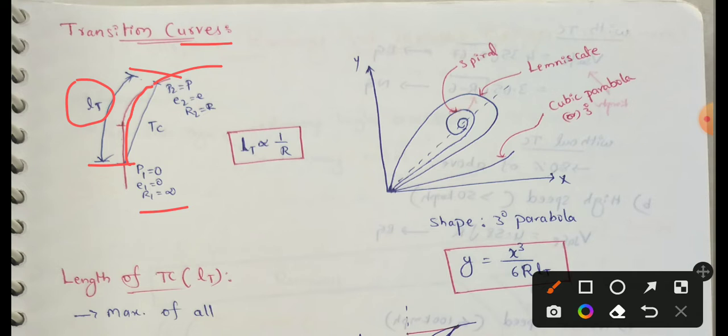Length of transition curve, LT, is inversely proportional to radius. So length of transition curve is increased when the radius is decreased, and the radius is increased when the length of transition is decreased.